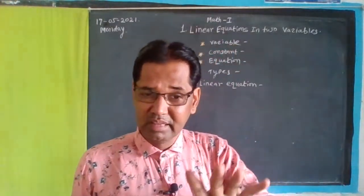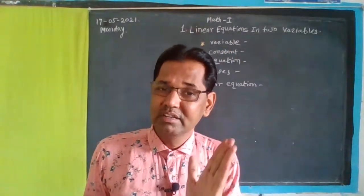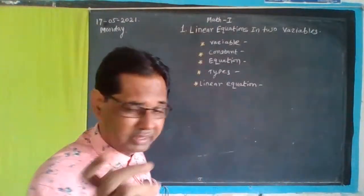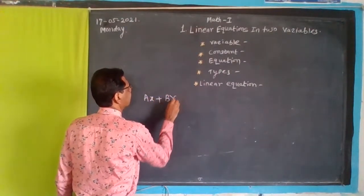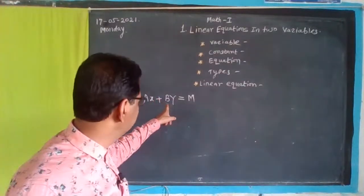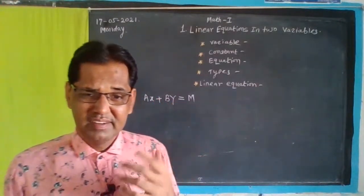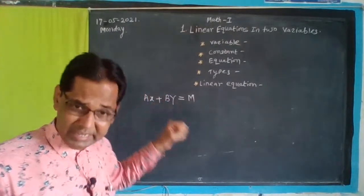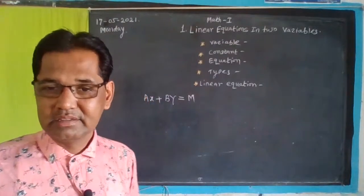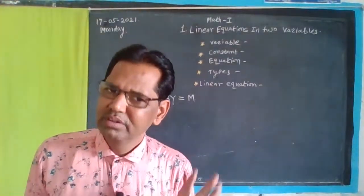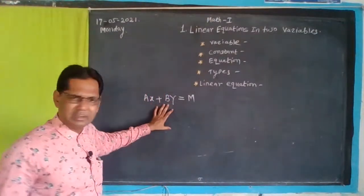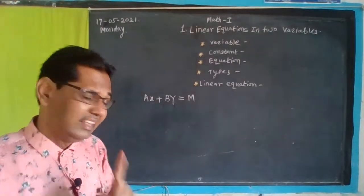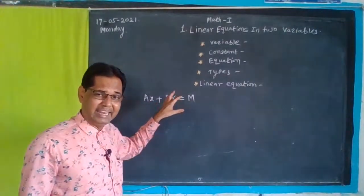This is a constant — when it does not change. Then we have an equation with some constant variables. So we have to identify which is constant and which is variable. In the equation, X and Y are the variables and A, B, and M are the constants. Understand?